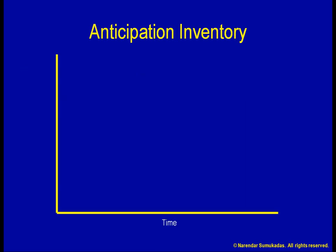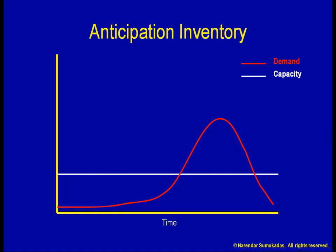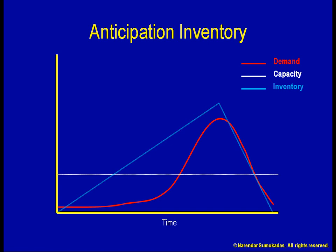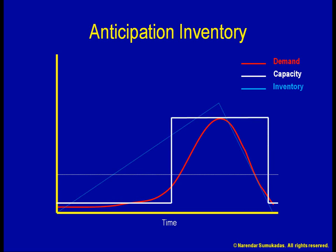Consider the snowmobile example. Here is our demand that peaks in winter. Meanwhile, we plan our capacity based on average demand. We build up anticipation inventory all year round and use it up during the peak season. To avoid anticipation inventory, we could build a larger factory with enough capacity to produce all the winter demand in winter itself, then mothball the factory for the remaining months. By better matching demand and capacity, we can avoid anticipation inventory. This option, of course, might increase our costs considerably.